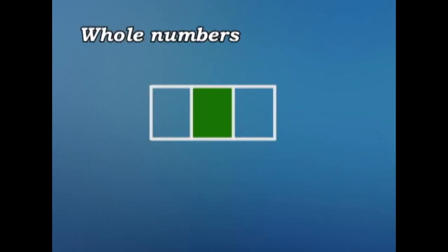Look at this box. How many equal parts are there in it? One, two, three. What do we call those equal parts? We call them thirds. How many have we colored? One. So we can say one third.